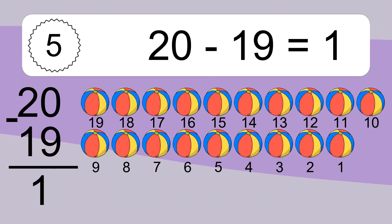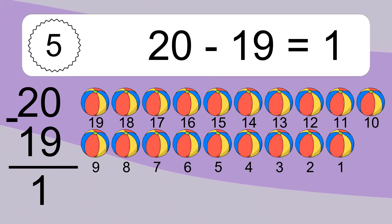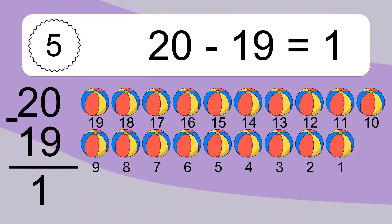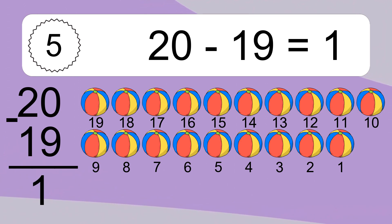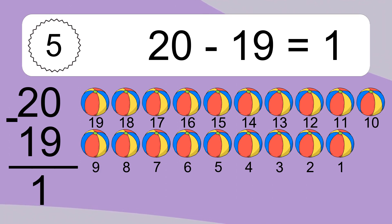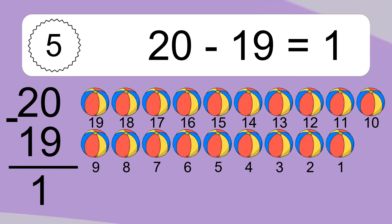20 minus 19 equals what? 20 minus 19 equals 1. Let's count it. 5, 4, 3, 2, 1.